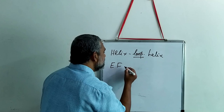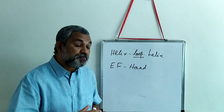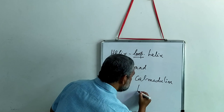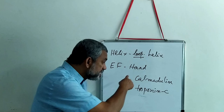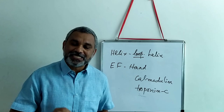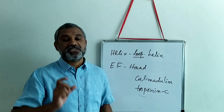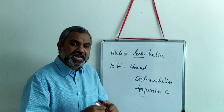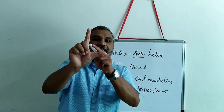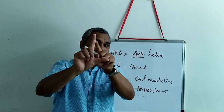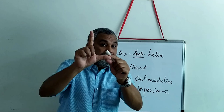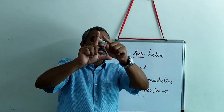You will find the EF hand very prominent in calmodulin and troponin C. In these two protein molecules, the role of the EF hand is to bind with calcium ions. The EF hand looks like a right hand held in a specific way — this is the shape of the EF hand. The alpha helical structure forms the E, the thumb is the F, and there is a crevice made between helix E and helix F — this is the long loop.